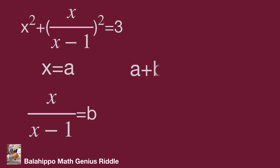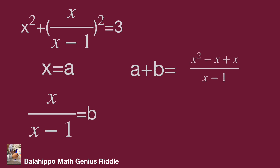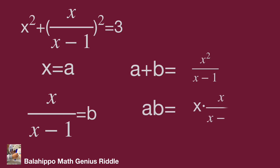If we compute a plus b, we get x plus x over (x minus one). Simplifying, a plus b equals x squared over (x minus one). For a times b: a times b equals x times x over (x minus one), which equals x squared over (x minus one). So the value of a plus b equals x squared over (x minus one).